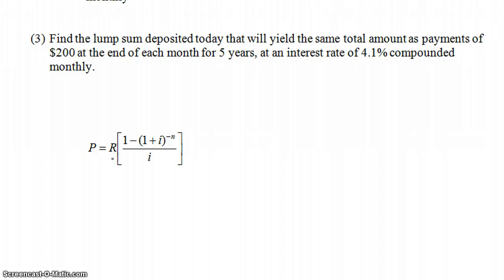For example, on like a car loan, what are your payments going to be? Or a mortgage, what are your mortgage payments going to be? That's asking you to find R. So that's a little bit different than these three questions here. These three, they're giving you those payments, right, $200 at the end of each month, and they're asking you to find the present value.